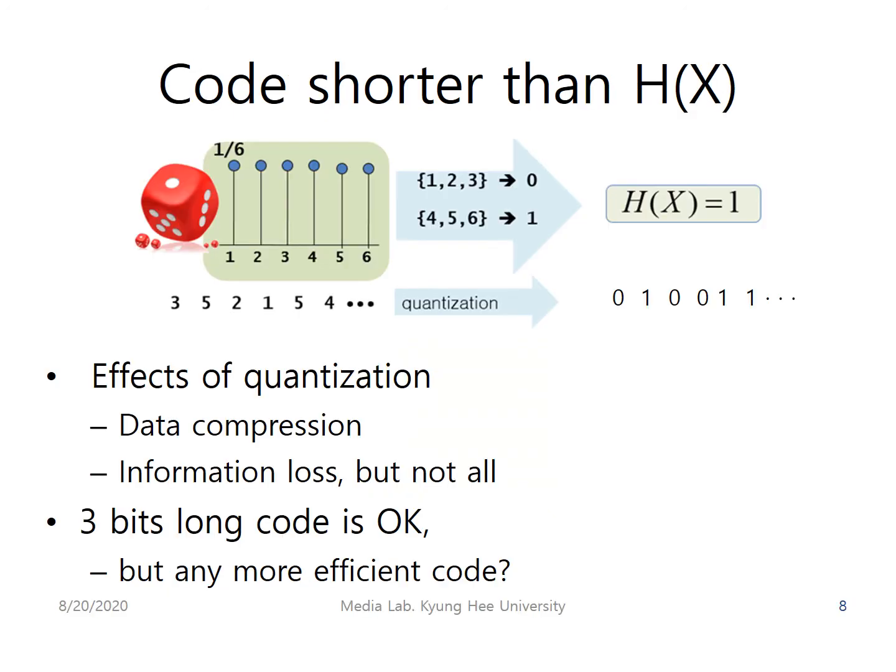What if you use a codeword shorter than entropy? What happens if you express the case by casting the dice in 1-bit? In this case, when 1, 2, 3 appears, it is expressed as bit 0. And let's say that 4, 5, 6 are expressed as 1-bit.